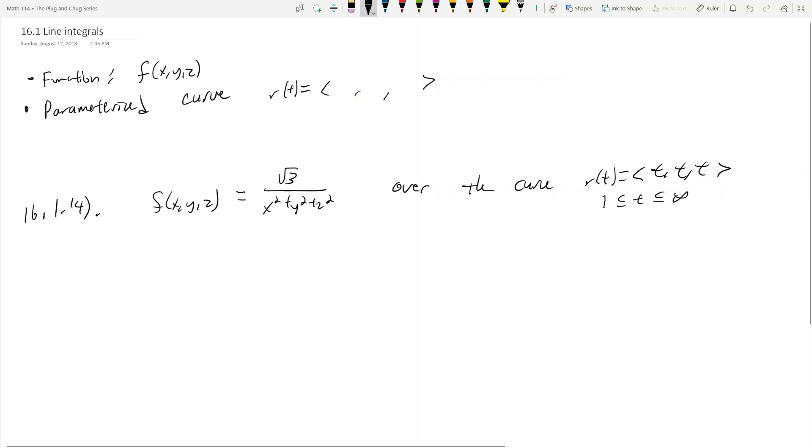And t goes from one to infinity. So how do we do this? A line integral in the 16.1 sense, when you have a function and a parameterized curve, it's the integral of f of x, y, z ds over the curve.